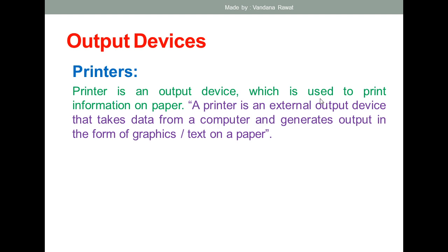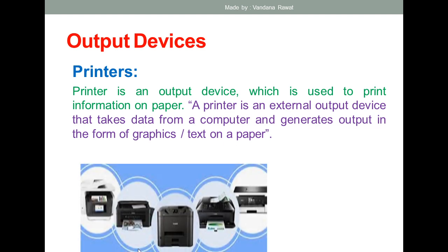A printer is an output device used to print information on paper. With a monitor we can see and display information, but if you want a printed copy, you use a printer. A printer is an external output device that takes data from a computer and generates output in the form of text, graphics, or images — whatever form the information is in — printed onto paper.